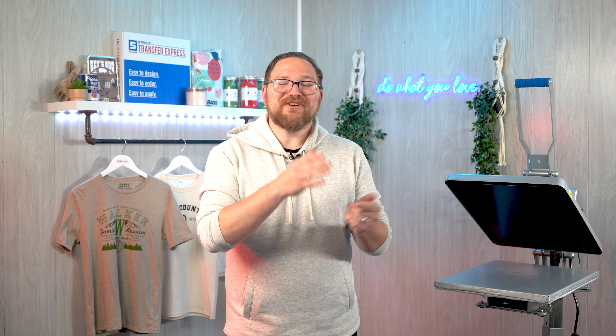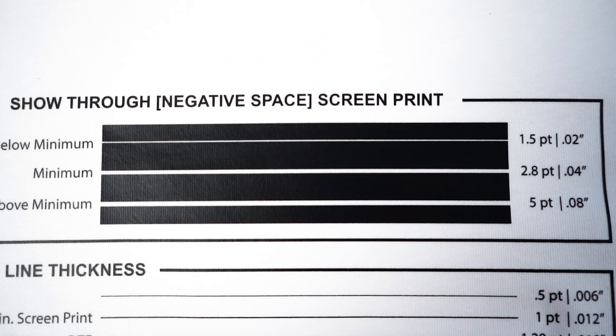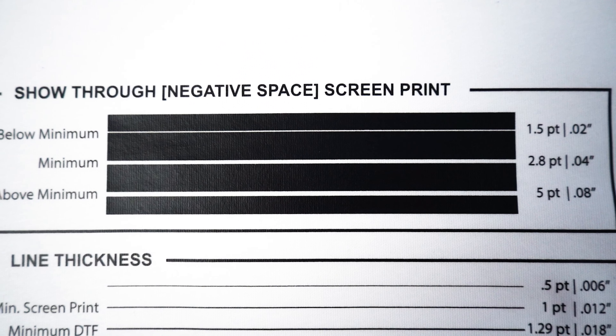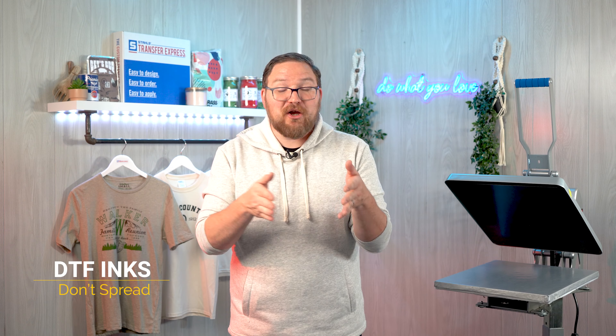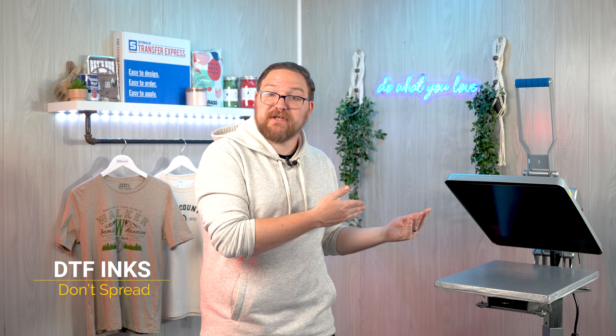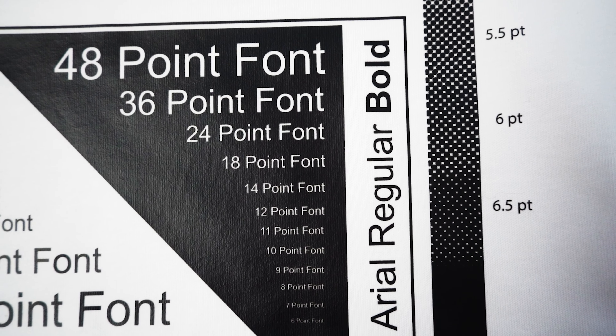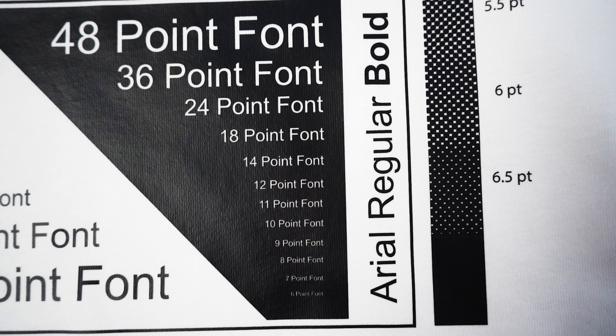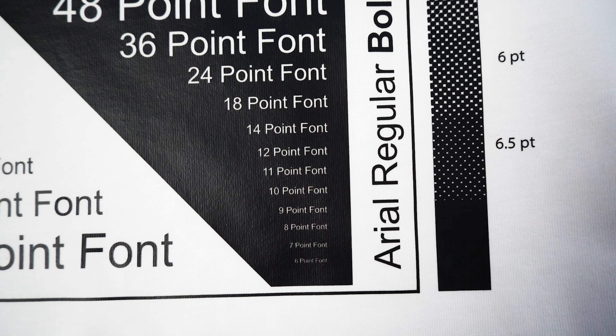Now let's shift on over to direct-to-film transfers. Before we dive into specifics, there are a few differences I'd like to point out. The first being the show-through areas. Since the printing process is different for direct-to-film, the inks do not spread like our Plastisol screen printing inks do under the pressure of the heat press. So it's a little bit more like heat transfer vinyl where it's just going straight down. This allows us to achieve finer show-through areas that we can't achieve with those screen printed Plastisol inks.